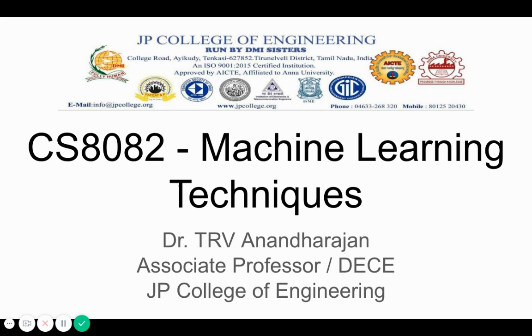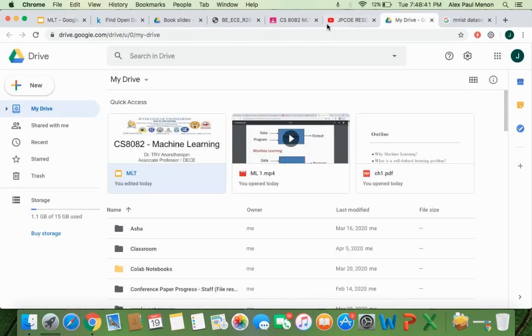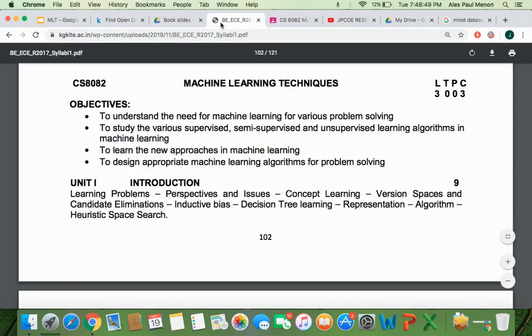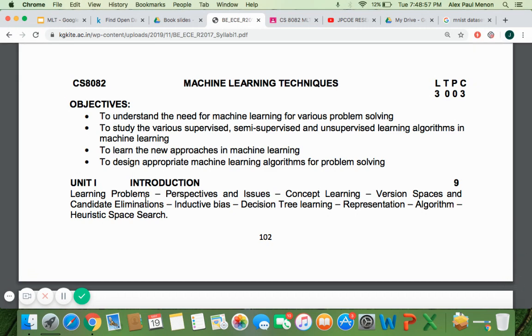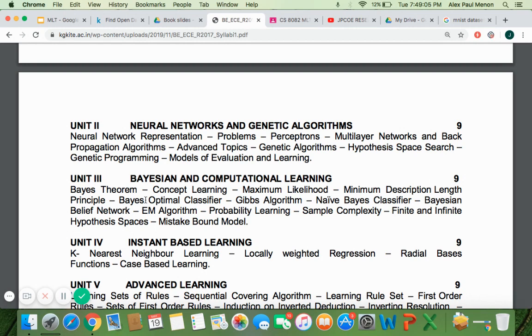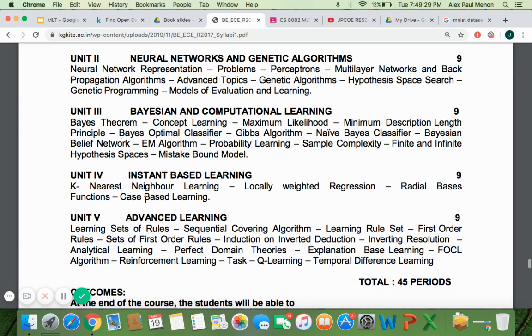So this is an elective for your seventh semester. So your syllabus basically deals with, in the first unit, you have learning problems, perspectives and issues, concept learning and similar topics. Similarly, in the second unit, you have neural networks and genetic algorithms, which are evolutionary algorithms giving you the idea of evolving into better hypothesis. And then in the third unit, you have Bayesian and concept based learning. And we try to understand classifiers better here. Similarly, you have instant based learning in the fourth unit, where we are looking at KNN learning. And finally, we look at the advanced learning in the fifth unit.